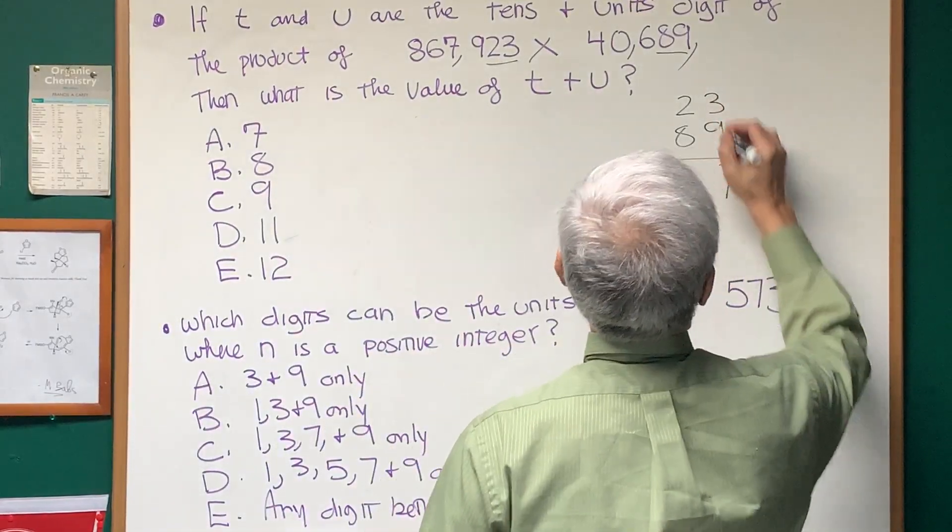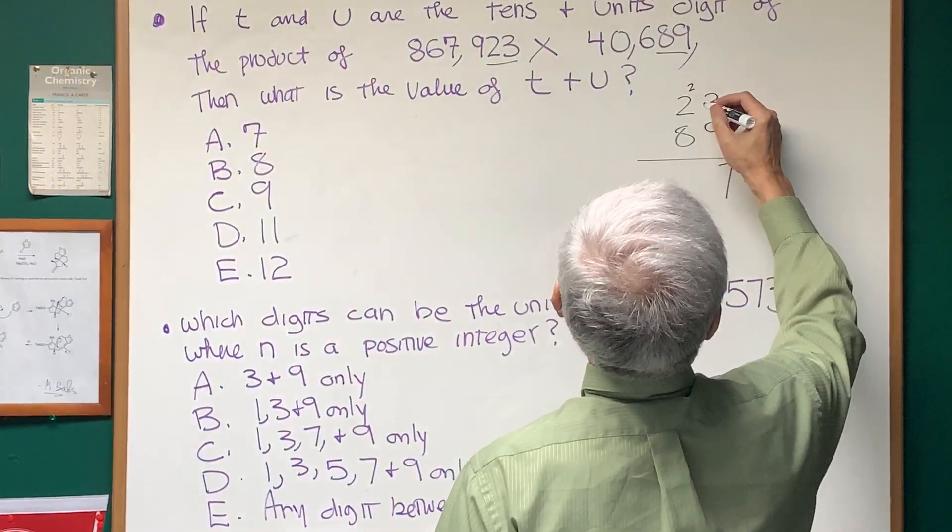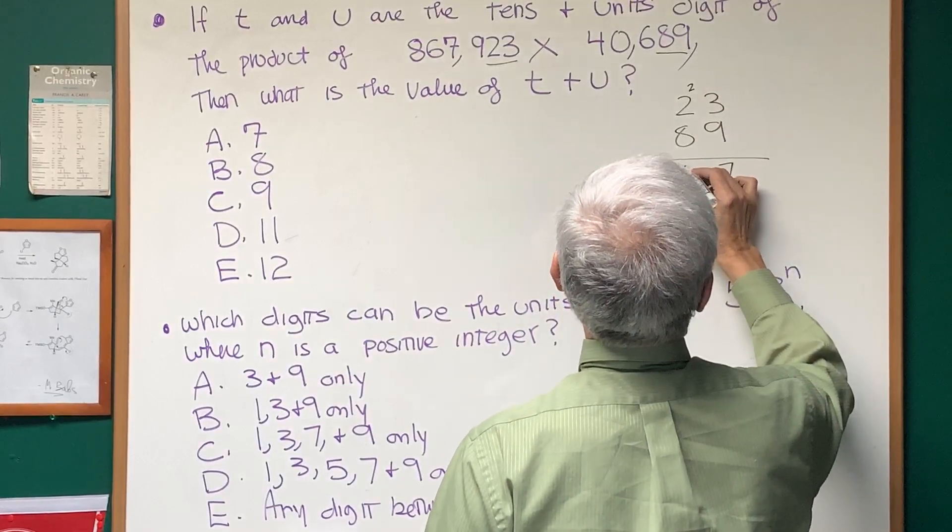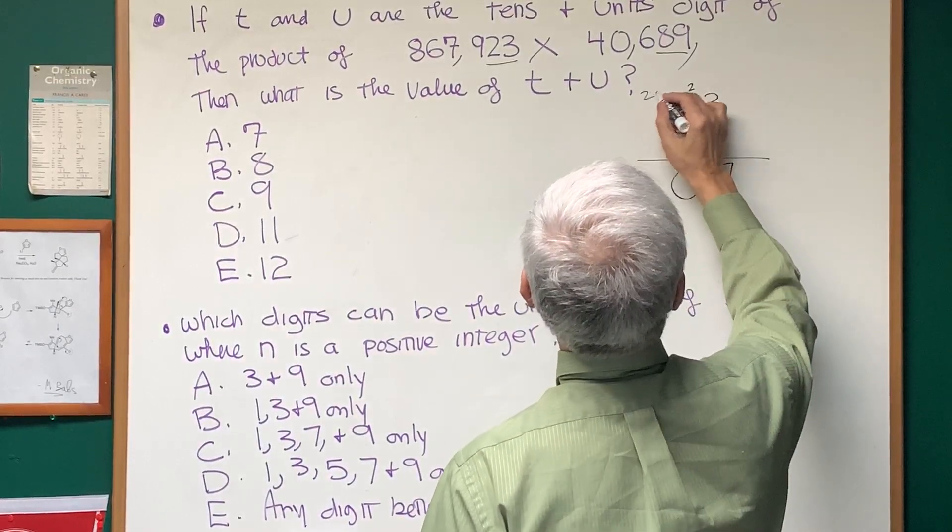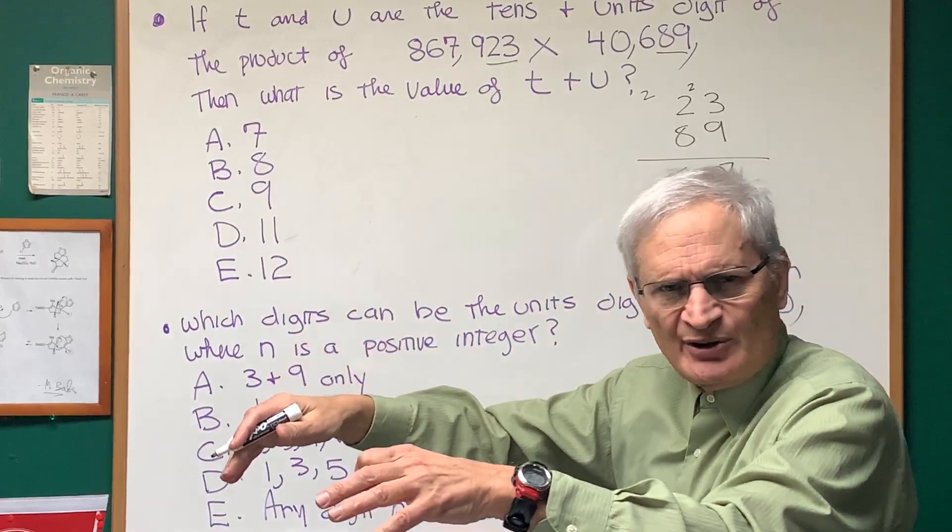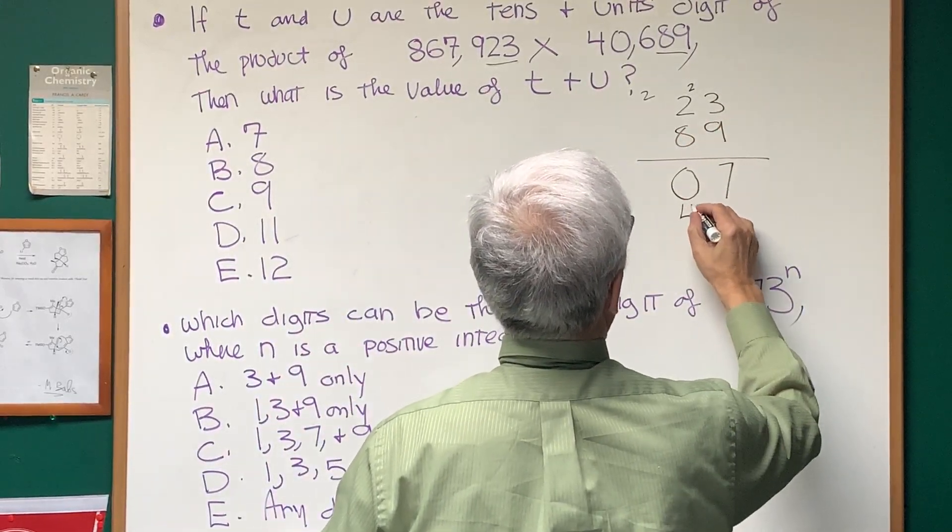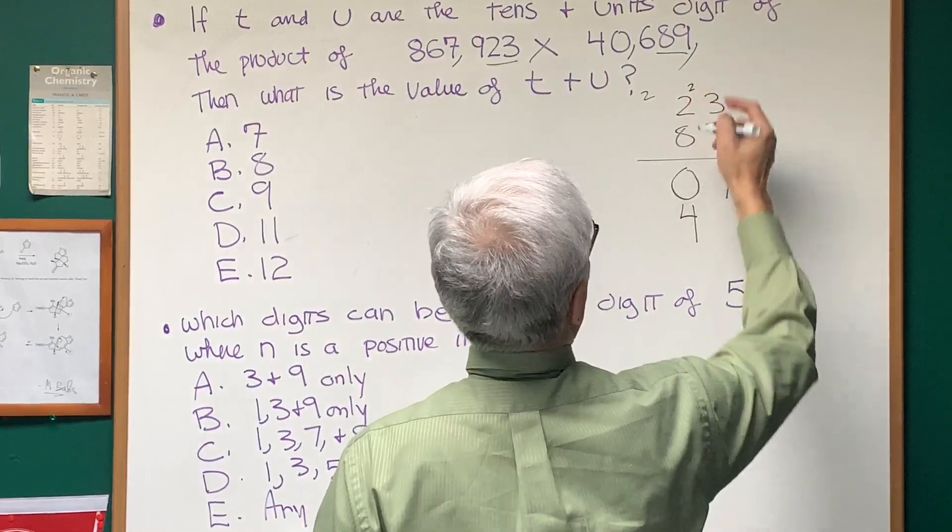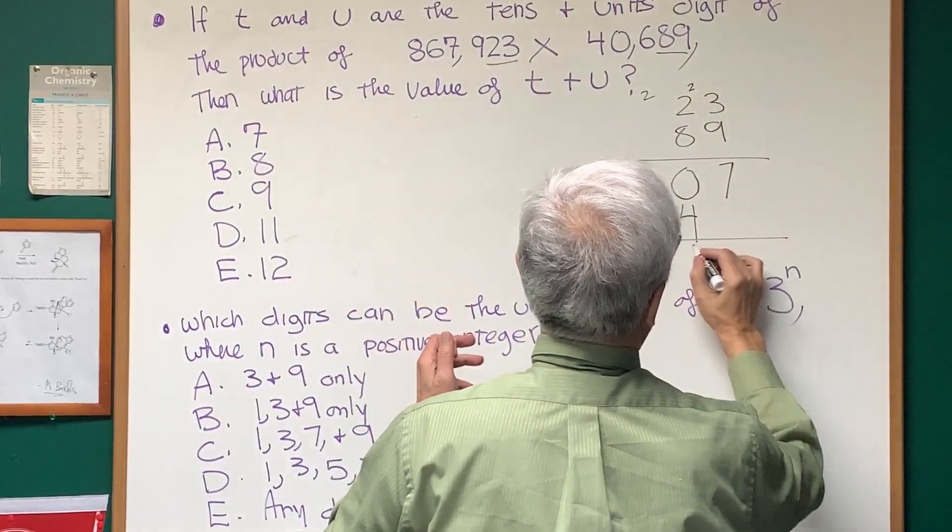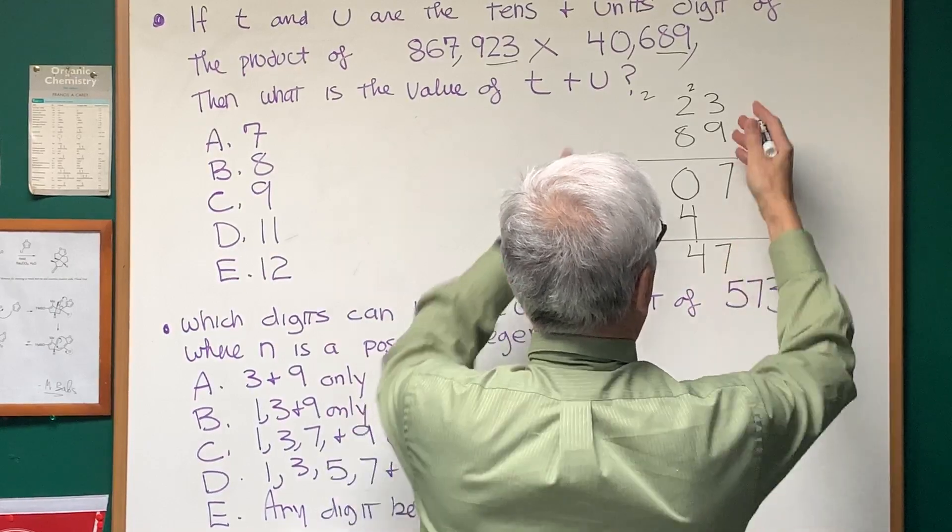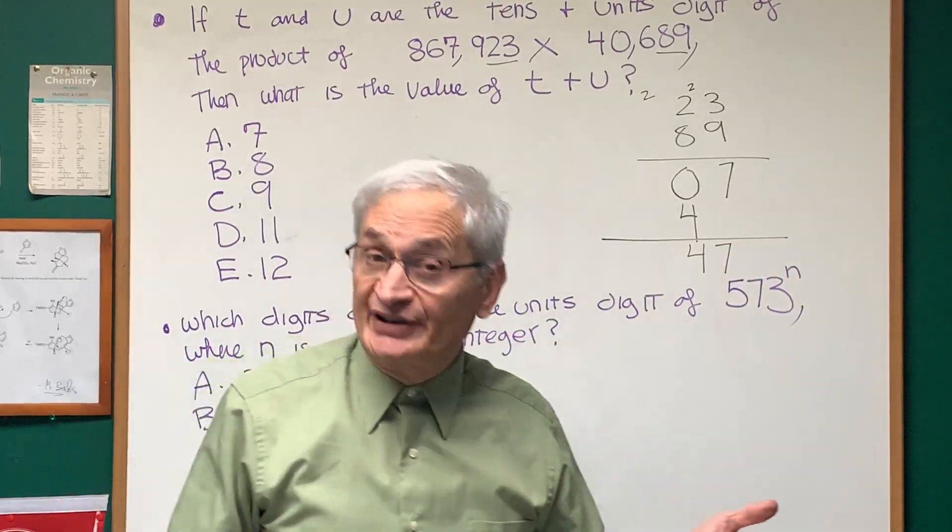Nine times three is twenty-seven, carry the two. Nine times two is eighteen, plus two is twenty, carry the two. We don't have to worry about that second carry. Okay, we move over to eight. Eight times three is twenty-four, carry the two. Eight times two is sixteen.